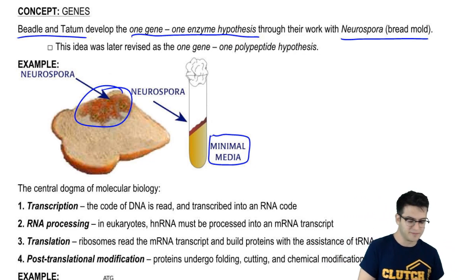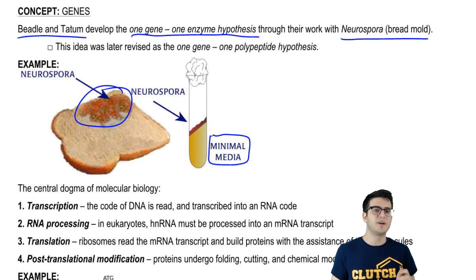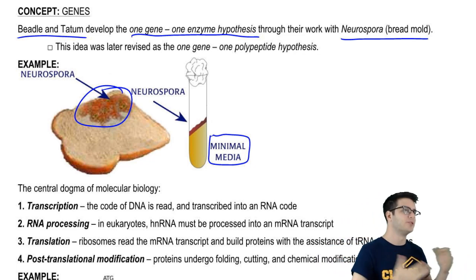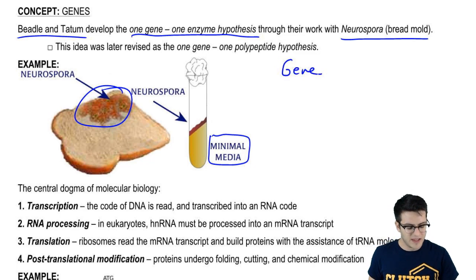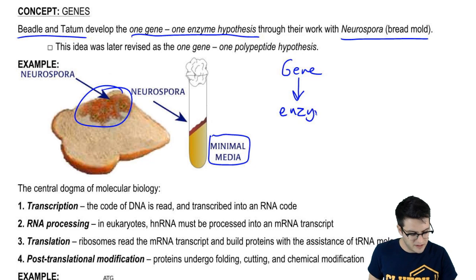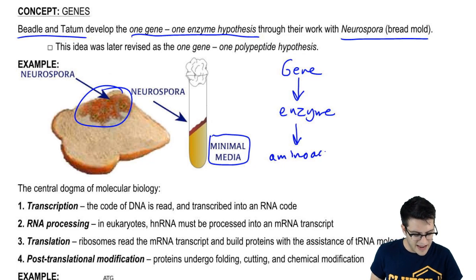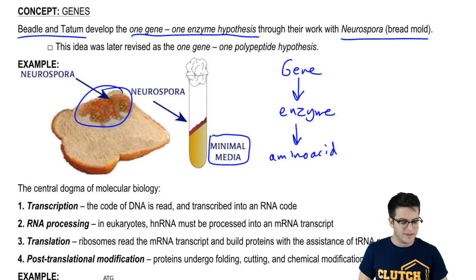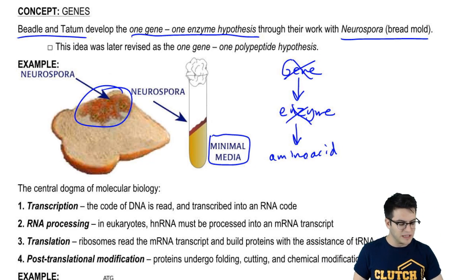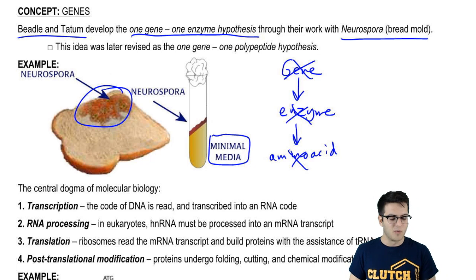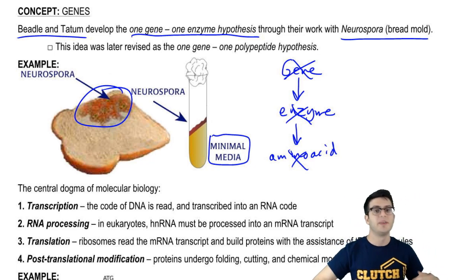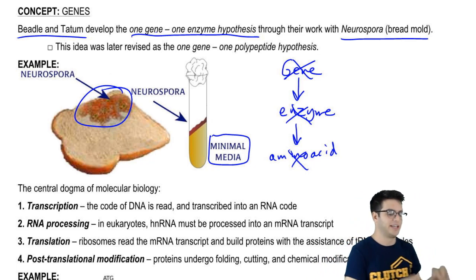This led them to conclude that the genes that were mutated must be genes that code for enzymes that produce those amino acids. They came up with the idea that there was a gene, and this gene had been mutated, and that gene normally produces an enzyme that would produce a particular amino acid. A mutation in the gene means that this enzyme won't be working, means that the amino acid won't be produced. They called this idea the one-gene, one-enzyme hypothesis — that each gene provides the code to build a particular enzyme.